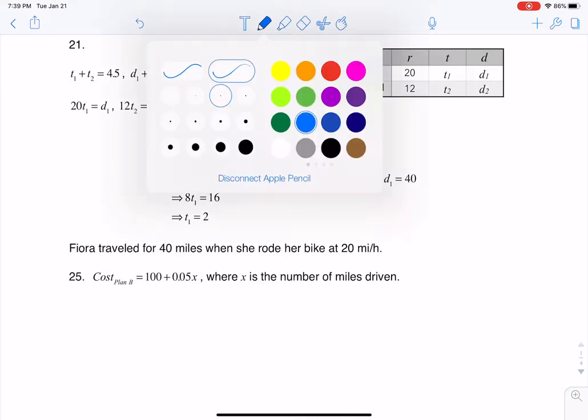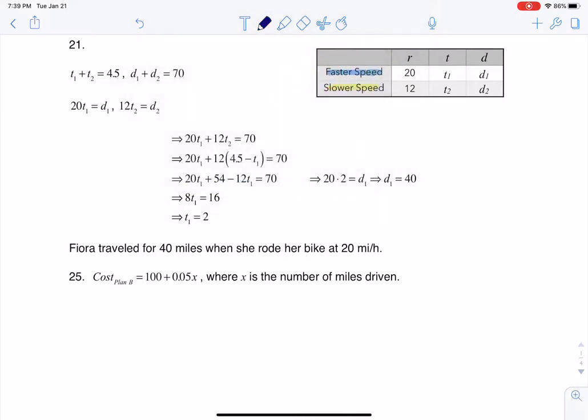Let's take a look at the numbers that were given to us, and really at the units that were given to us. The first number we run into is 20 miles an hour, then 12 miles an hour, then 70 miles, and then the last number we get is 4.5 hours. Let's start to parse out where these numbers go.